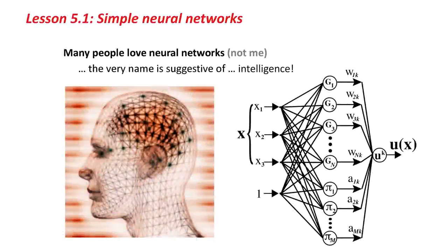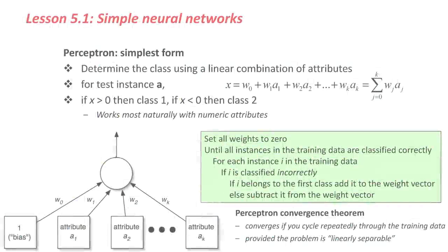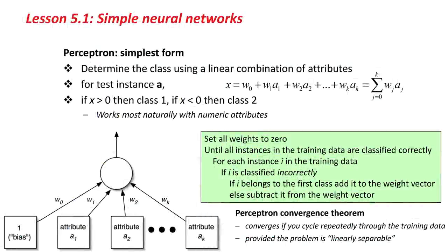So let's get back to the lesson — Lesson 5.1. We're going to talk about simple neural networks. Now a lot of people love neural networks, and I'm not one of them. I think it's a brilliant term, because it conjures up the image of some really cool, brain-like kind of mechanism. But actually, you should think of the rather grungy picture on the right — a linear sum. The very name is suggestive of intelligence; however, the reality, I think, is not. We're going to talk about the simplest neural network: the perceptron.